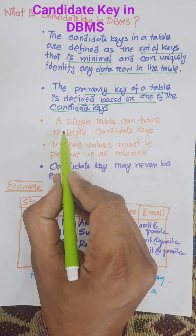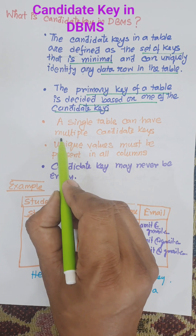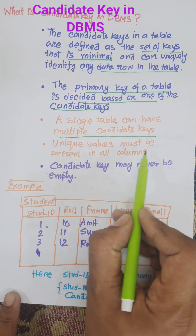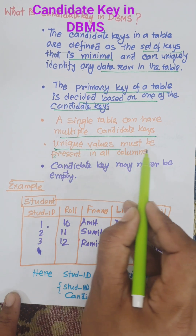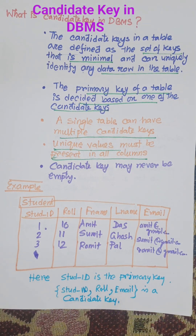A single table can have multiple candidate keys — more than one candidate key is possible in a table. All candidate keys must have unique values present in all columns.